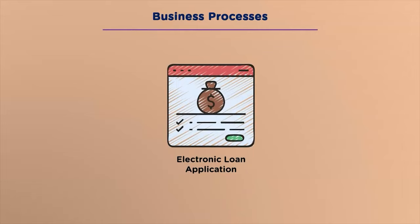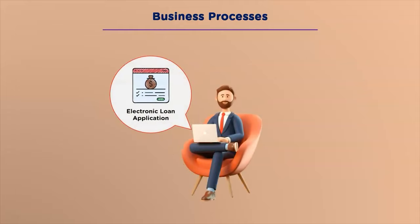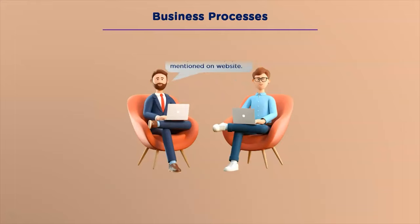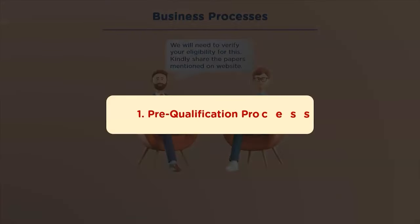All these processes start once the customer provides input — in this case, an electronic application forwarded to the salesperson by the bank's IT system. By evaluating the submitted application, the salesperson formulates a list of loan products to present to the customer. If the customer is interested in a specific product like a home loan, the salesperson provides details about it, including eligibility criteria, and requests documents such as ID proof, income source or salary slip, and property documents. This initial phase is known as the pre-qualification process.